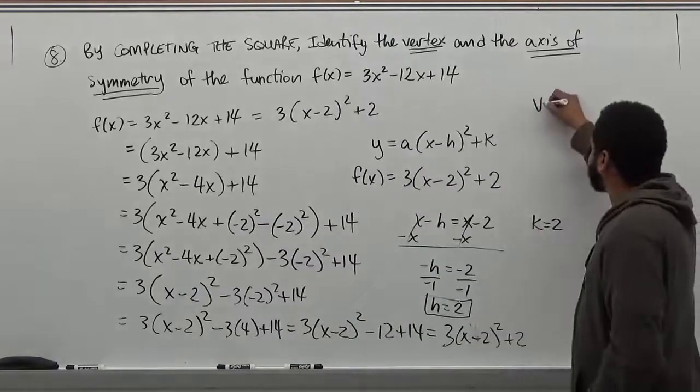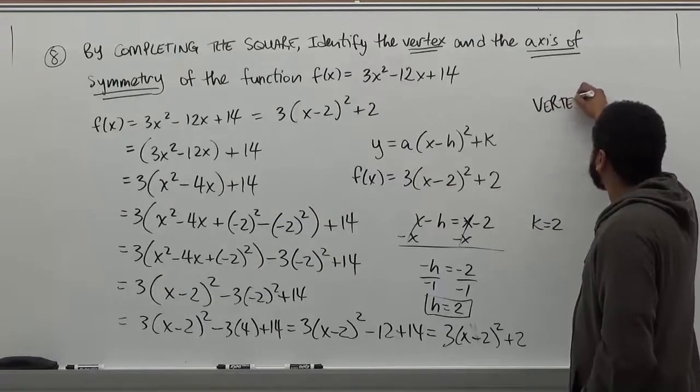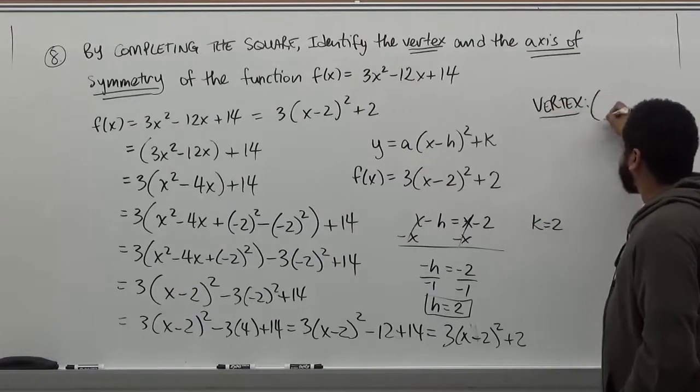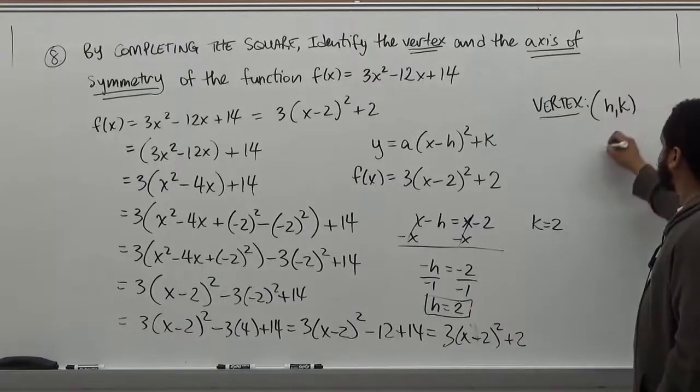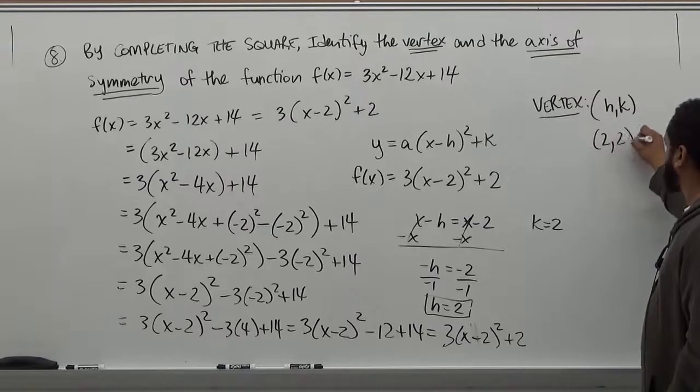And here we have our vertex then. Our vertex then is going to be (2, 2) because our vertex is h and k. Our vertex point is then (2, 2).